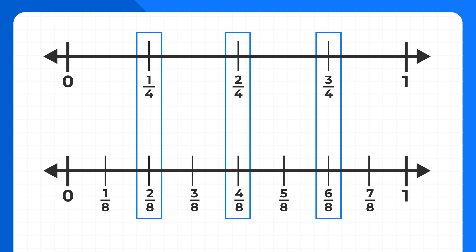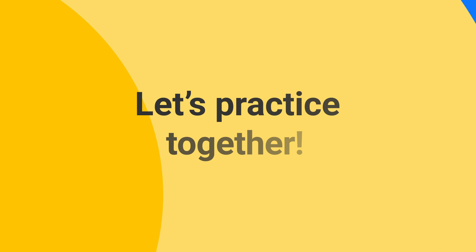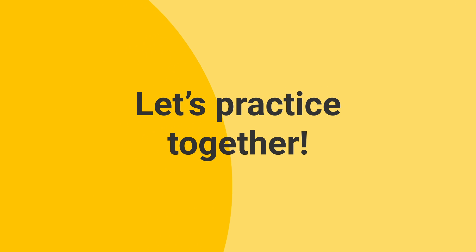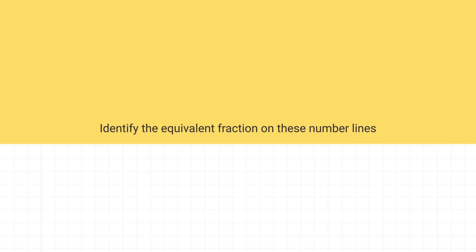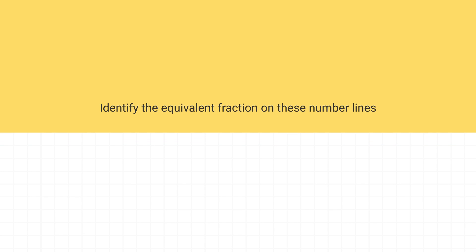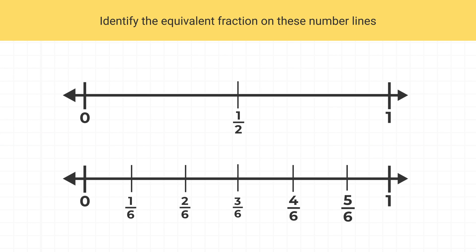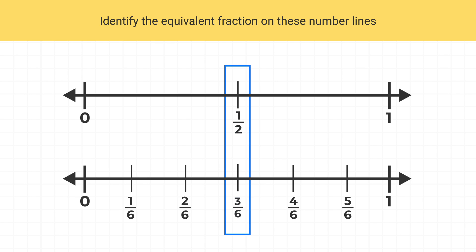Now that you've seen how to find equivalent fractions on a number line, let's do some practice together. Let's identify any equivalent fractions from these two number lines. Remember that equivalent fractions are at the exact same place on their number lines. One half is at the exact same spot as what fraction? We can see one half is at the same spot as three sixths. So we could say one half is equal to three sixths.